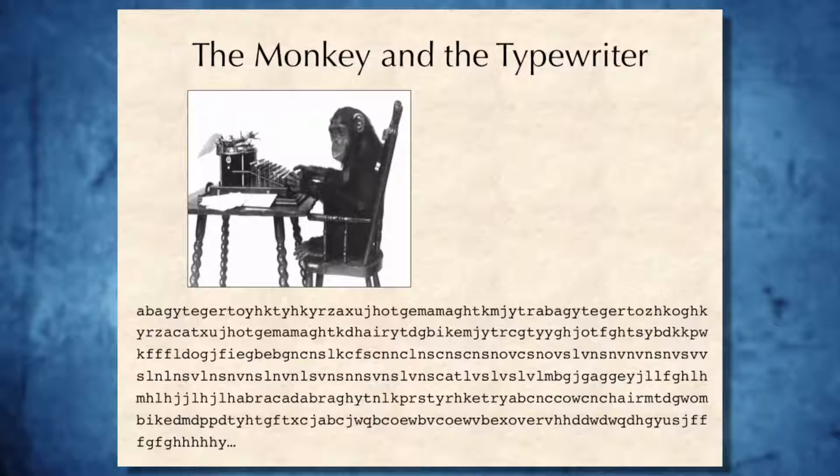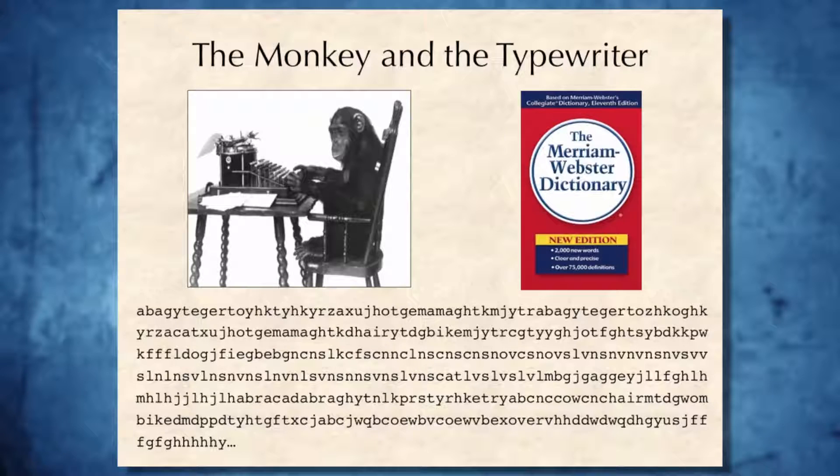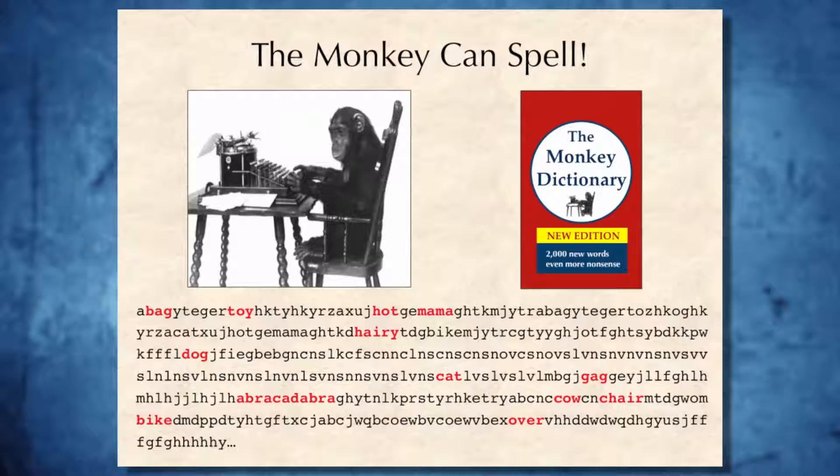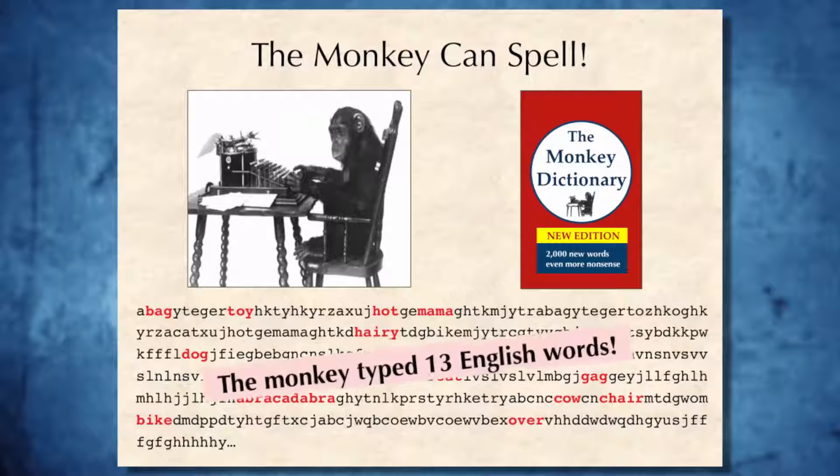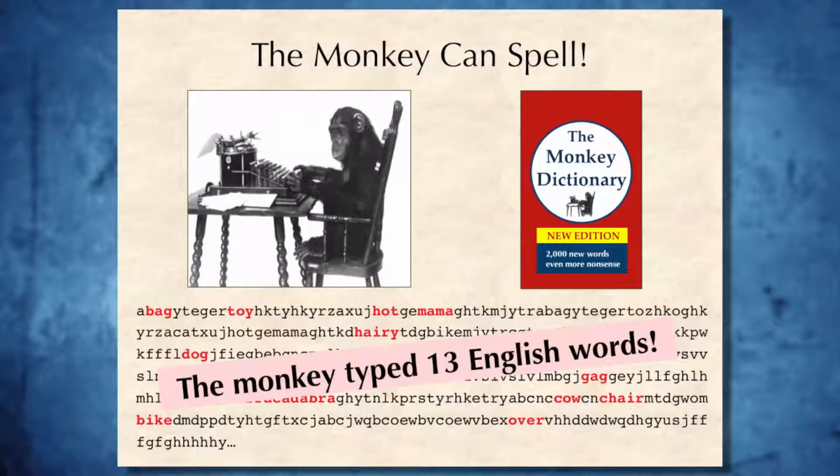To answer this question, we will bring in a monkey, give this monkey a typewriter, and let the monkey type random keys on this typewriter for a very long time. Afterwards, let's check how many correctly spelled English words the monkey generated. We can use Webster dictionary to check it. In this particular case, the monkey generated certain correctly spelled English words.